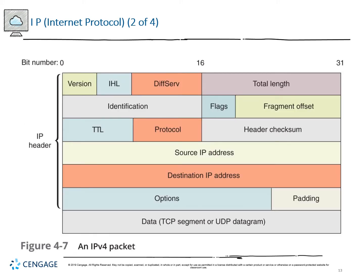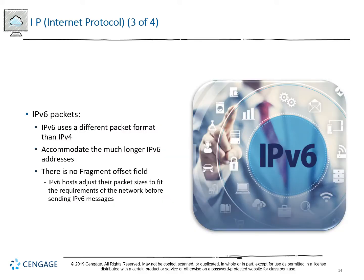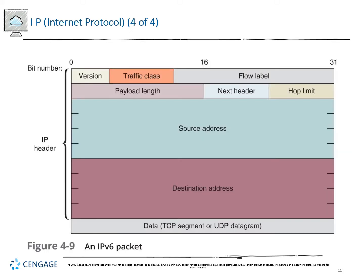An IPv4 packet is more complex than a TCP segment — it includes the attached TCP segment plus fields like version, differentiated services, total length, fragment offsets, padding, and source and destination IPs. IPv6 uses a very different format and must accommodate much longer addresses — IPv6 is four times the length in binary compared to IPv4. There is no fragment offset field in IPv6; packet sizes are adjusted by the hosts. The IPv6 packet looks very different in terms of complexity — instead of more options, it just has bigger addresses.